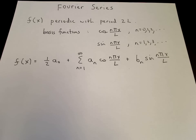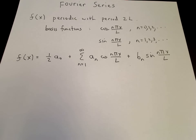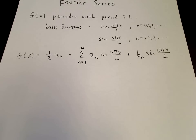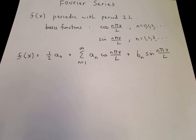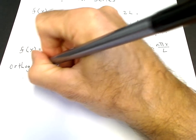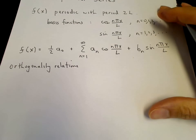So f(x), with this expansion, is periodic with period 2l. The nice thing about Fourier series is that the infinite sum of cosines and sines on the right-hand side will converge to the left-hand side. These functions are called complete, and they are enough to model f(x). To determine what the a's are, we need to use the orthogonality relations, which are integral relations of cosines and sines.